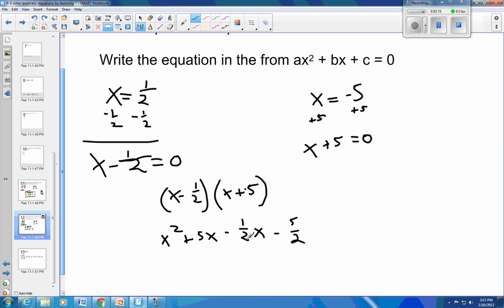From there, I want to combine like terms here, these middle ones. So the x squared is here. 5 minus 1 half is 4 and 1 half. And then minus 5 halves. And equals 0. You could have equal 0 here and equal 0 there. And this would be your final answer.